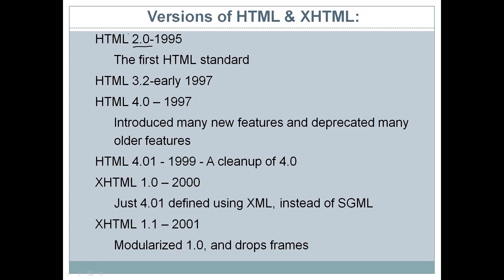XHTML 1.0 was released in the year 2000. XHTML, as stated, is the Extensible Hypertext Markup Language — an extended version of HTML. XHTML 1.0 is essentially HTML 4.01 defined using XML instead of SGML. In XHTML, XML is used in place of SGML. Then XHTML 1.1 in the year 2001 modularized version 1.0 and dropped the frames concept. These are the different versions of HTML and XHTML.